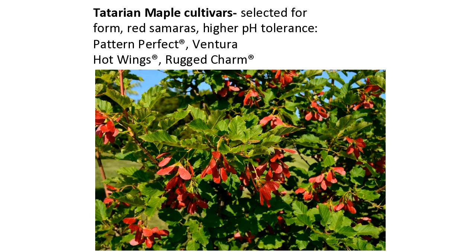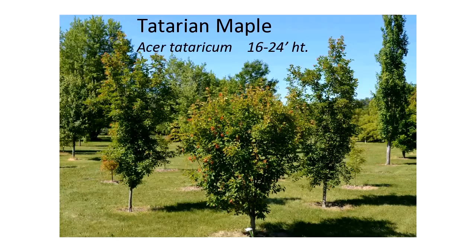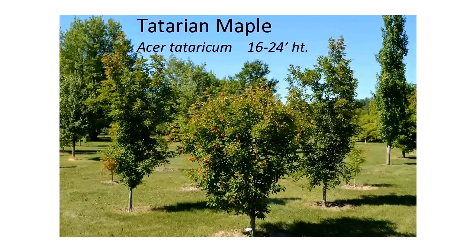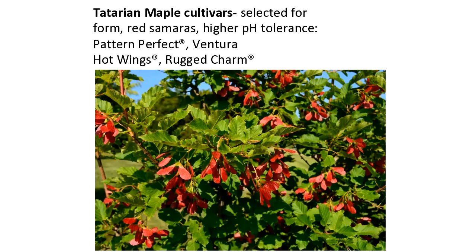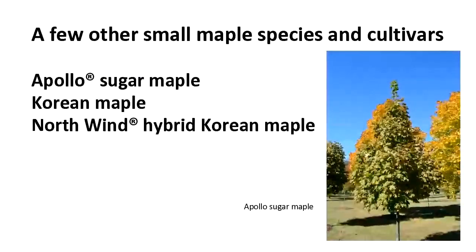Going back one slide, you can see the differences in form — Hot Wings in front is more rounded with bright red wings, and Pattern Perfect in the back is a much more upright form for growing in the landscape. I do want to mention a few other small maples. We typically plant a huge silver maple or attempt sugar maples, but we don't go much beyond that. There are some other small maples we can incorporate and give a better spot in the landscape.